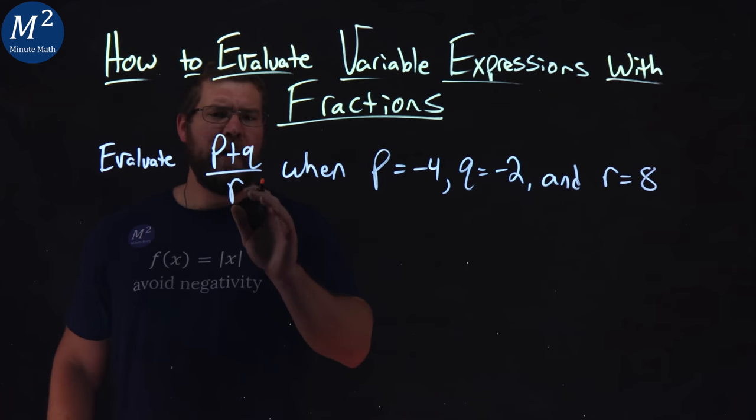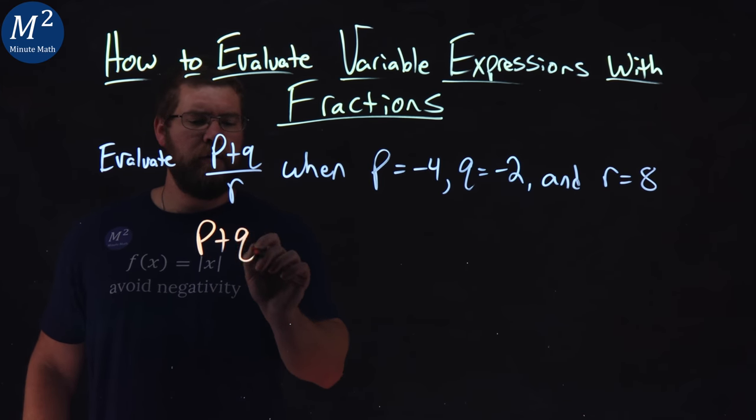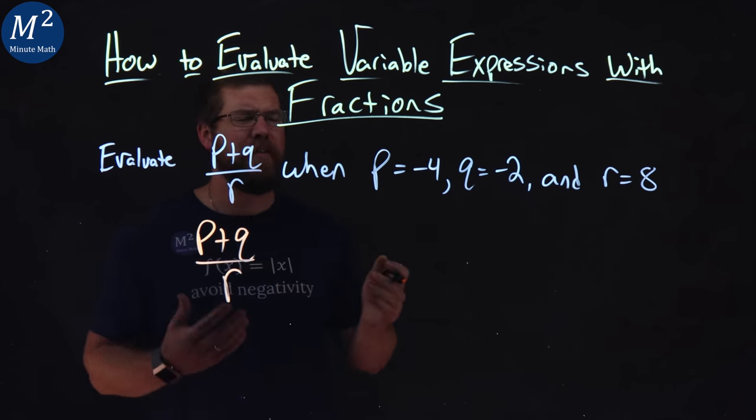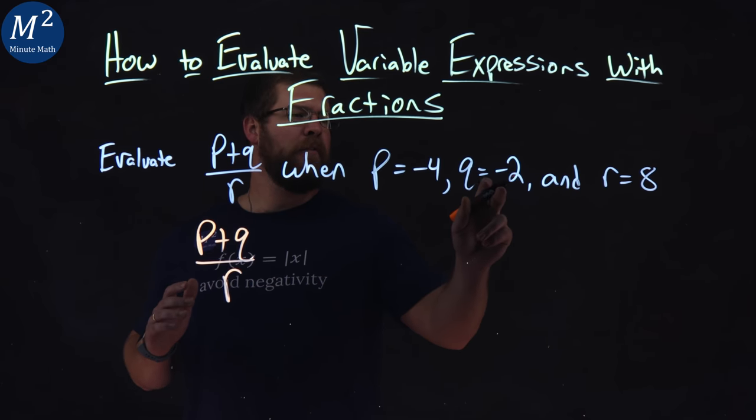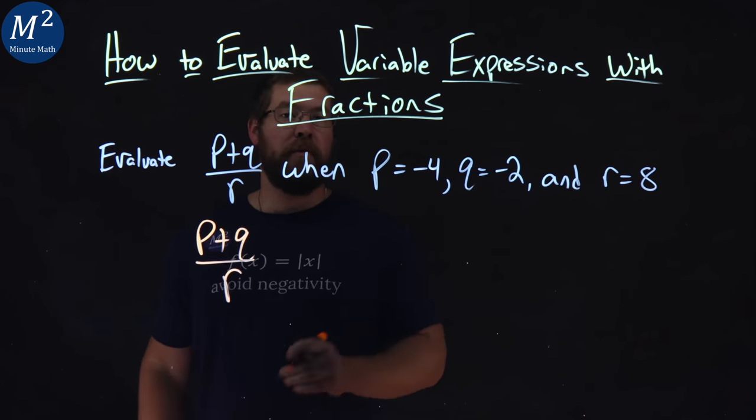Well, let's rewrite our expression: P plus Q over R, all these variables. What we want to do now is substitute each one of these variables with their equivalent number that they told us.